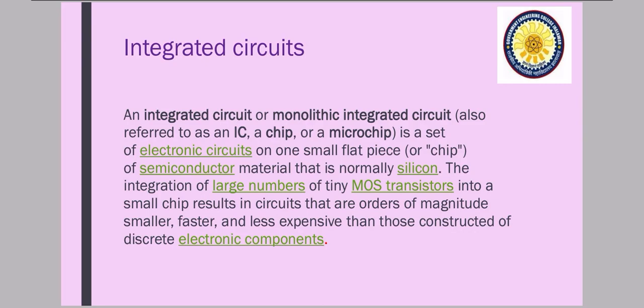This definition I have taken from Wikipedia. An integrated circuit or monolithic integrated circuit also referred to as IC or a chip or a microchip is a set of electronic circuits on one small flat piece called chip or semiconductor material that is normally silicon. The integration of large number of tiny MOS transistors into a small chip results in circuits that are orders of magnitude smaller.